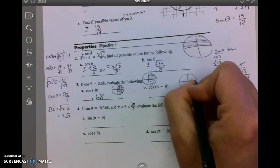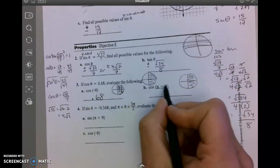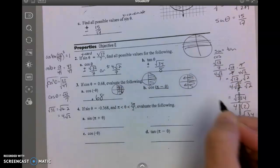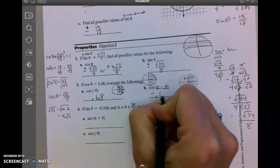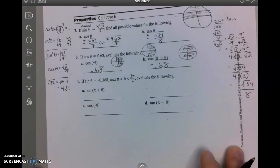For this one, pi minus theta means move side to side. So in both of these instances, cosine becomes negative 0.68.